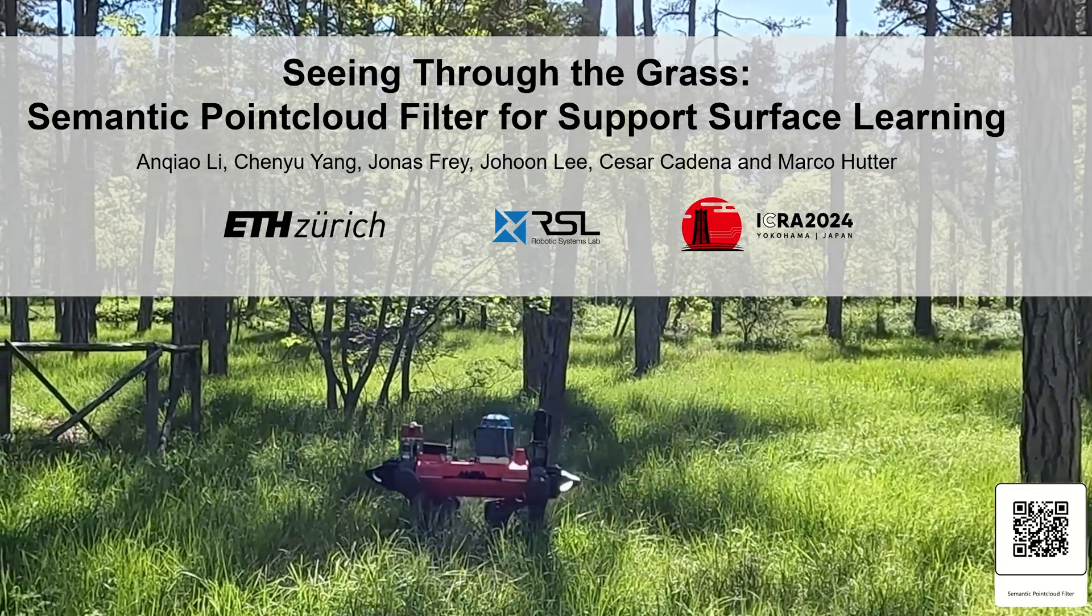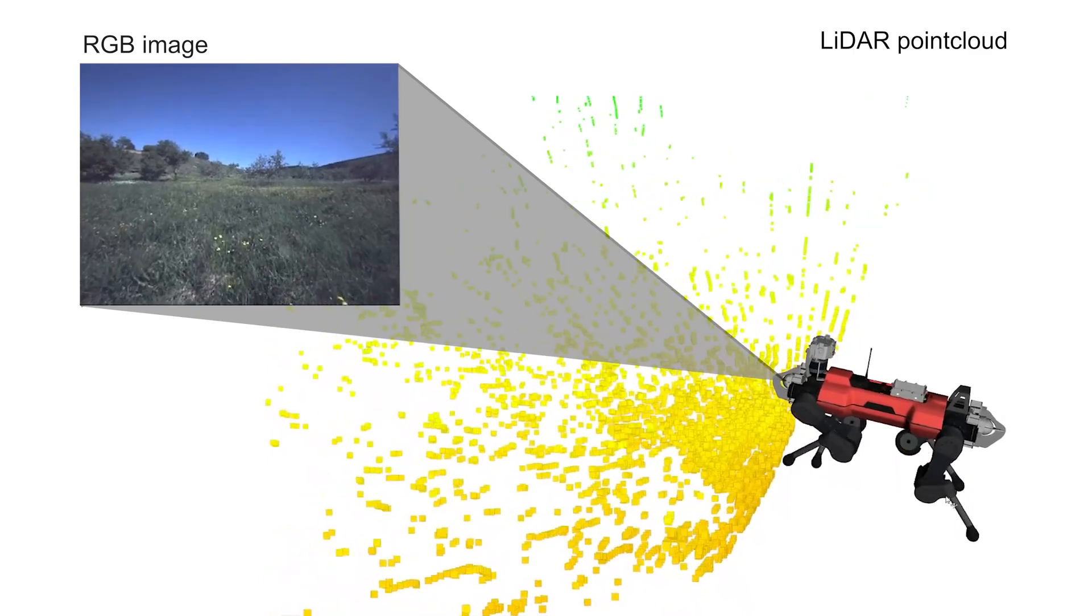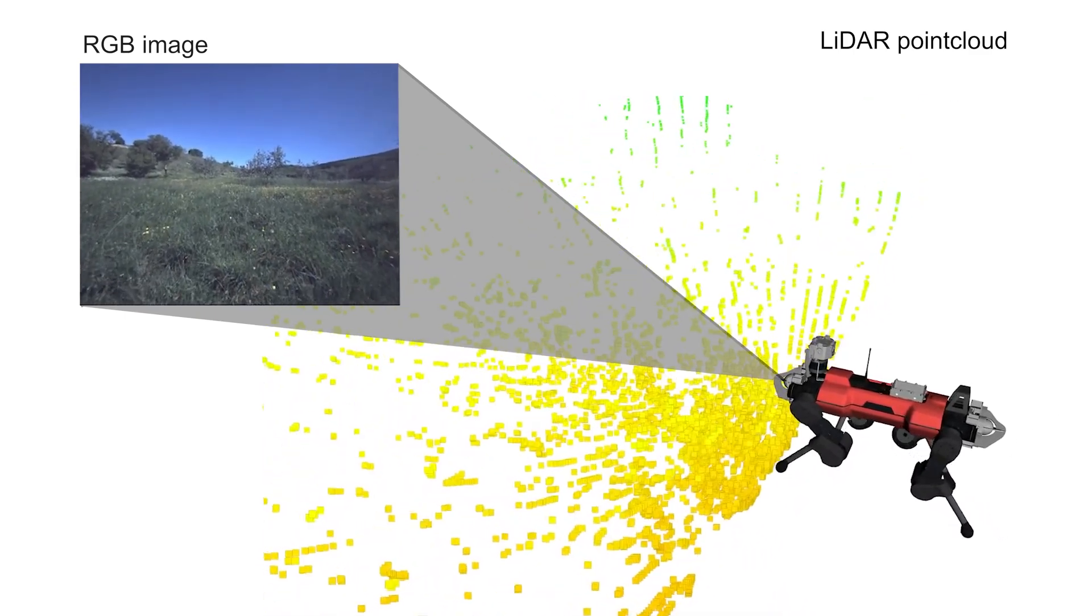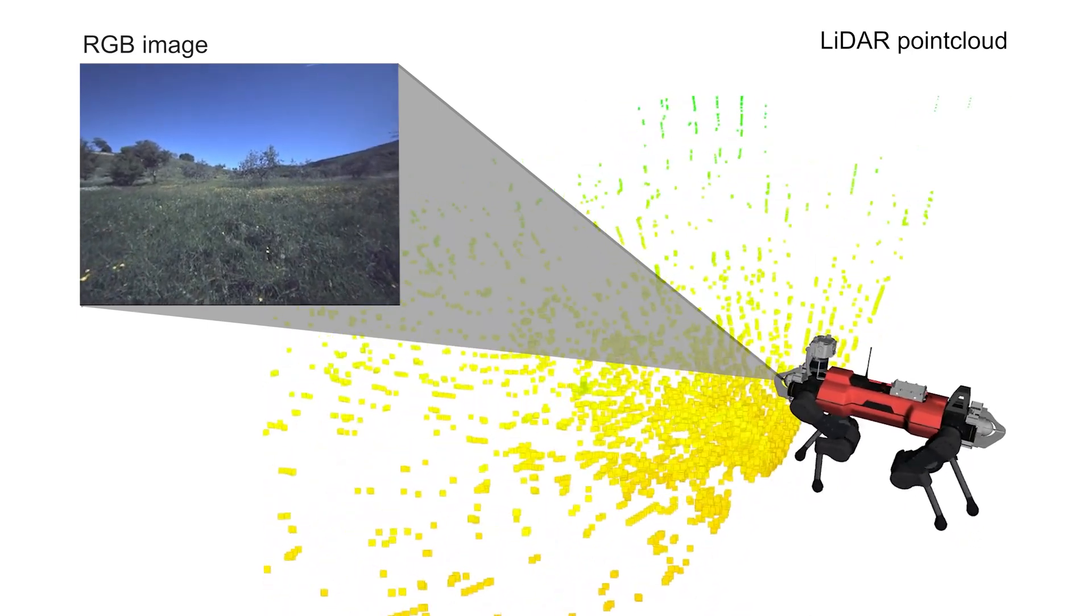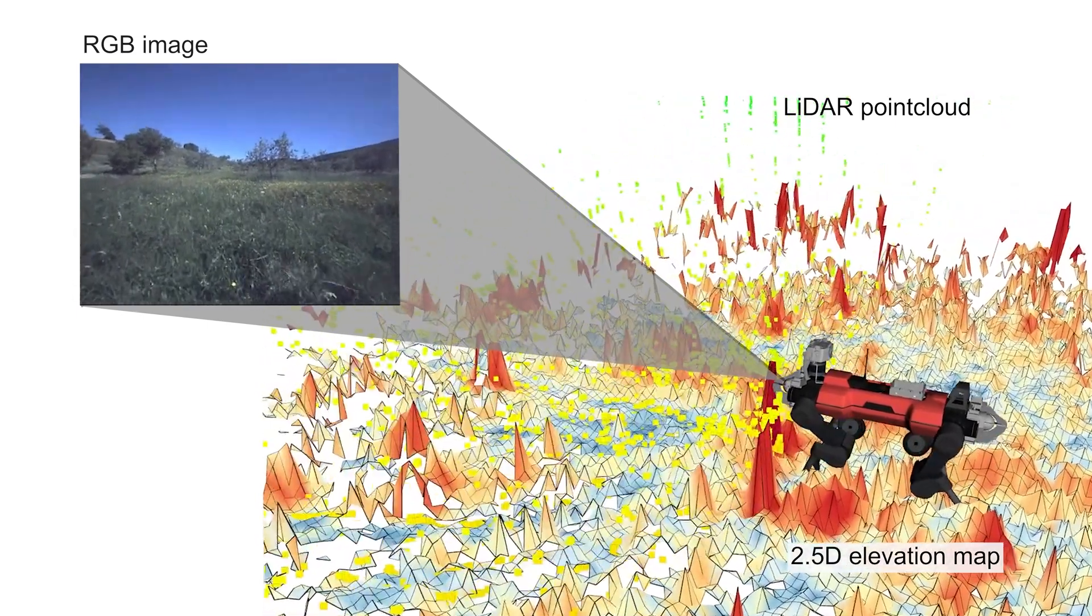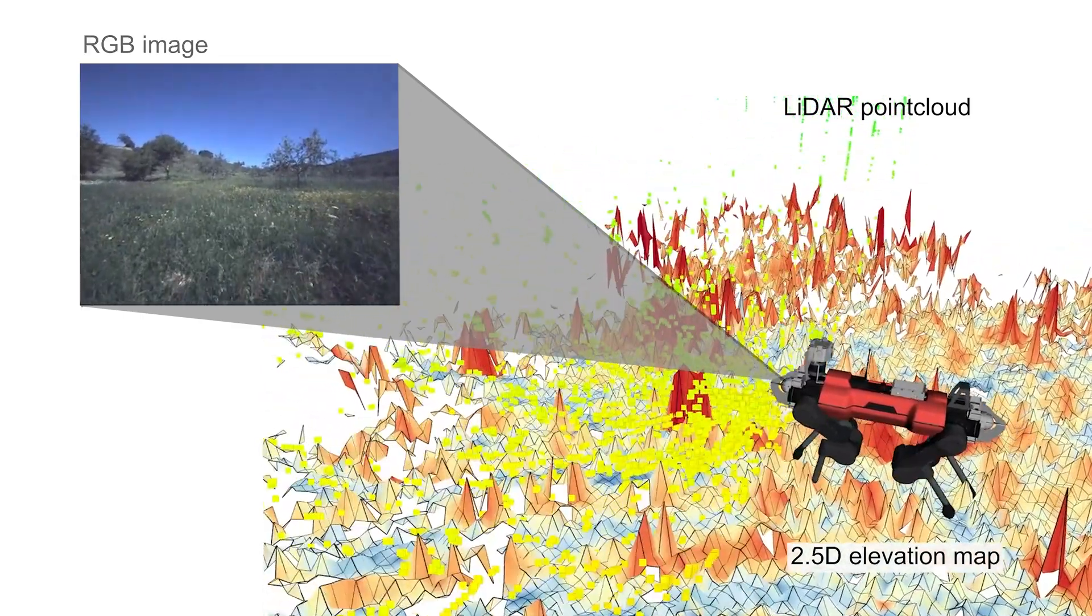We present our work on a semantic point cloud filter for support surface learning. For ground robots, it is crucial to understand the support surface of the environment. However, within natural environments, the sense geometry by LiDAR or depth sensors does not align with the actual support surface. This limits the performance of downstream modules such as planning or locomotion.